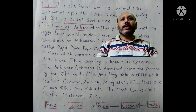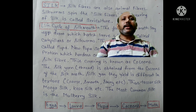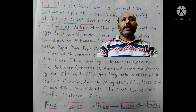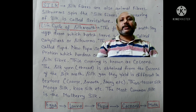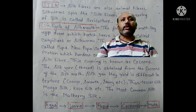The silk yarn or thread is obtained from the cocoons of the silk moth. The silk yarns yield different textures — coarse, smooth and shiny, etc. Types include tasar silk, munga silk and kosa silk. The most common silk is mulberry silk. The life cycle of the silk moth is: eggs → larvae → pupa → cocoon → moth.